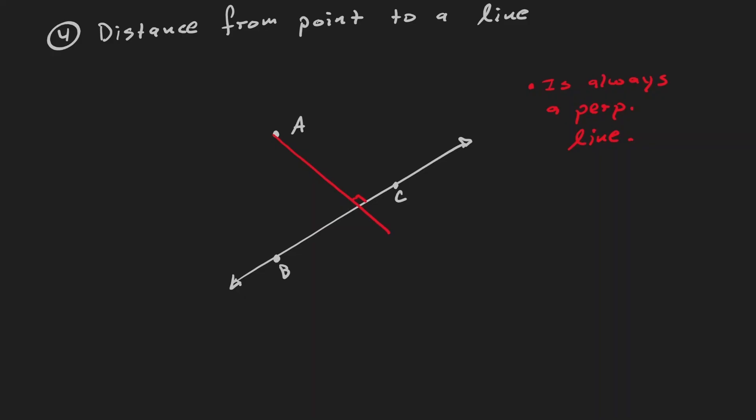So perhaps I need to be a little bit careful here. So let me actually give a name here. Let's call this E. Notice that the line segment AE is perpendicular to the line. Well, in reality then, AE is the distance.